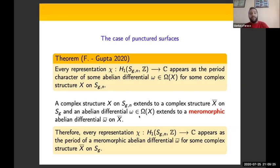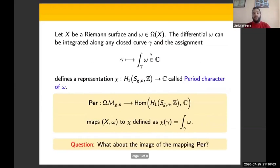This can always be done. But if you pick an abelian differential ω in Ω(X), this extends to a meromorphic abelian differential ω̄ on X̄, because some of the punctures may appear as poles of this abelian differential. So if you adopt this new perspective, what our theory says is that any representation χ appears as the period of a meromorphic abelian differential ω̄ for some complex structure X̄ on S_g. Notice that here the surface is closed, but the representation is taken from the first homology group of a punctured surface.